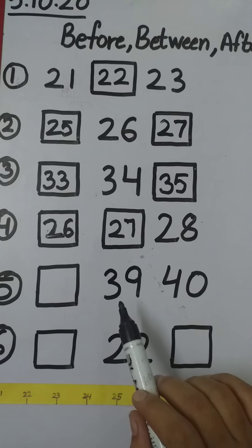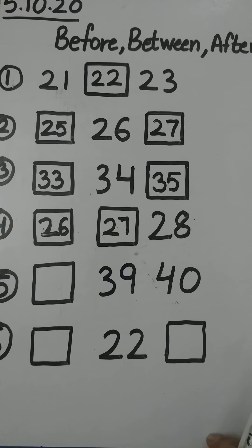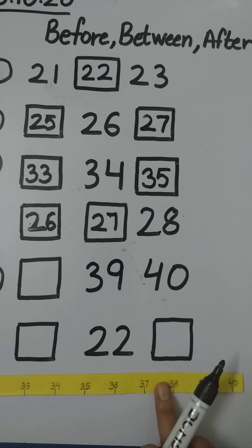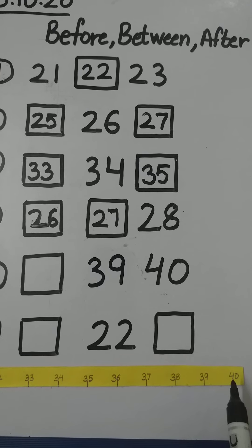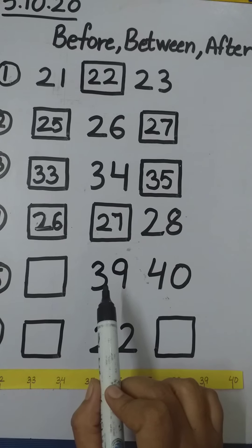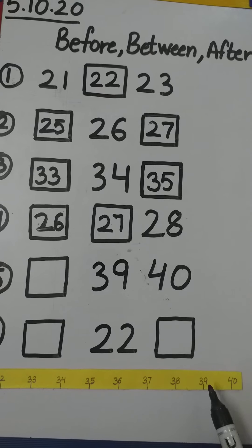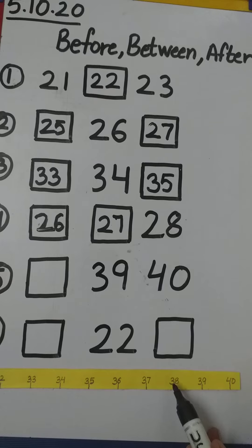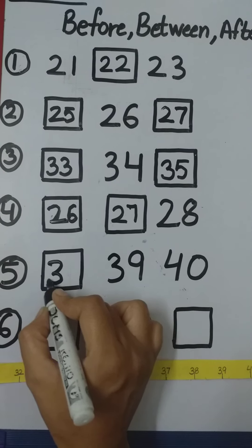So now children, next is numbers 39 and 40. Let's find 39 and 40 on the number line. Now tell me what comes before 39? We have to move towards the left hand side. So there is number 38. So we have to write here number 38.